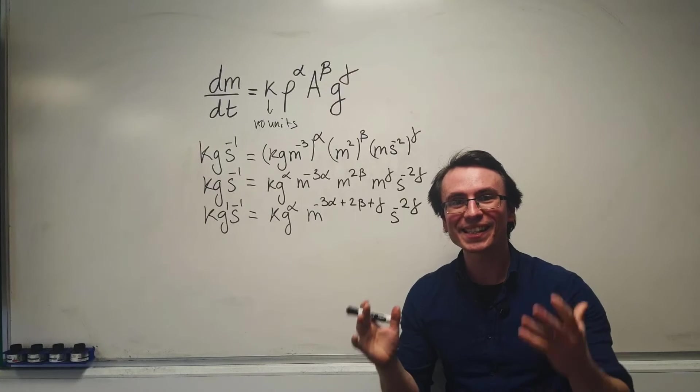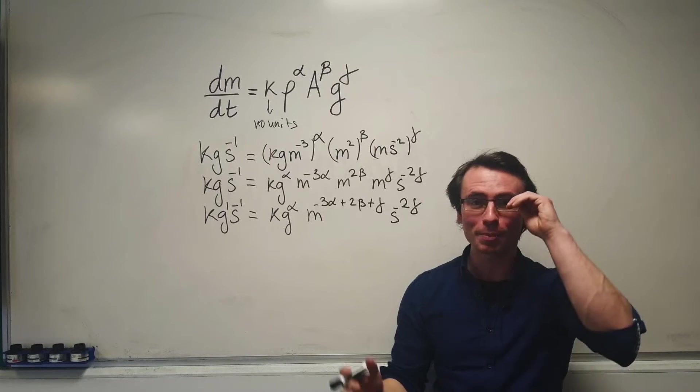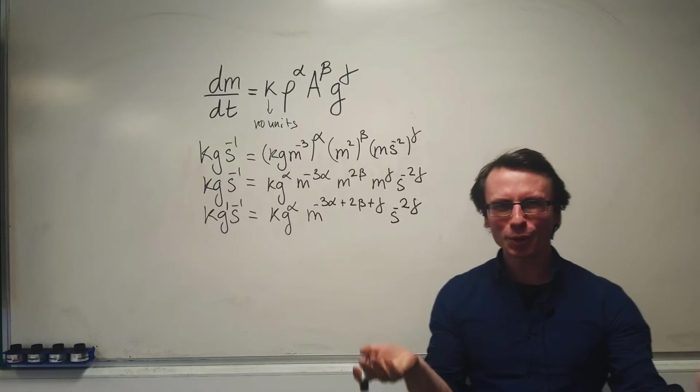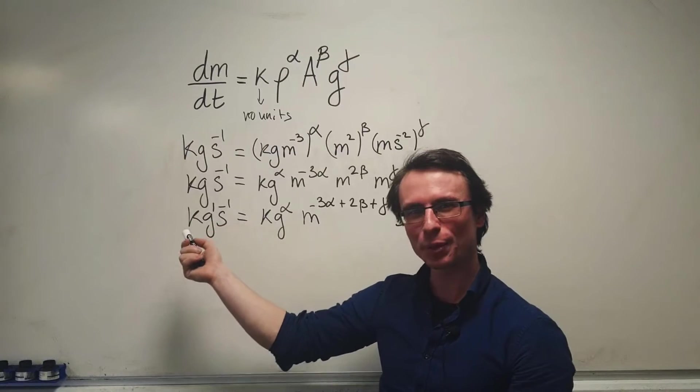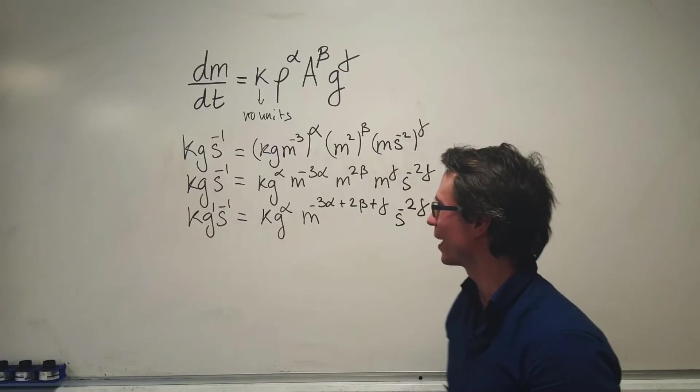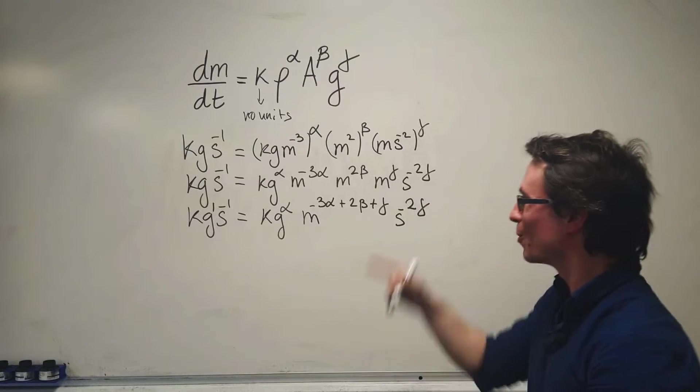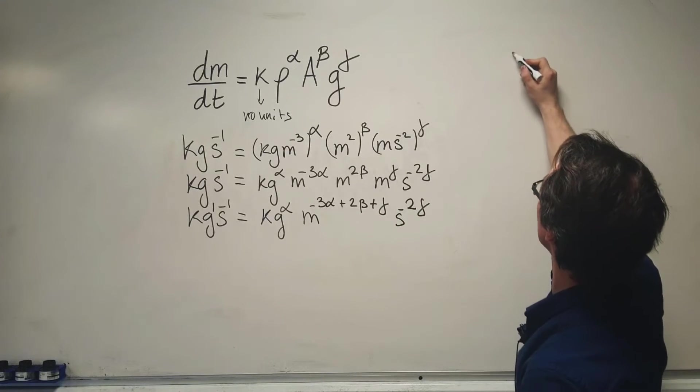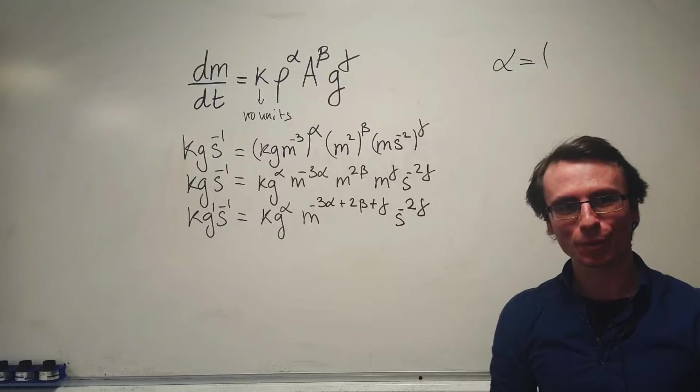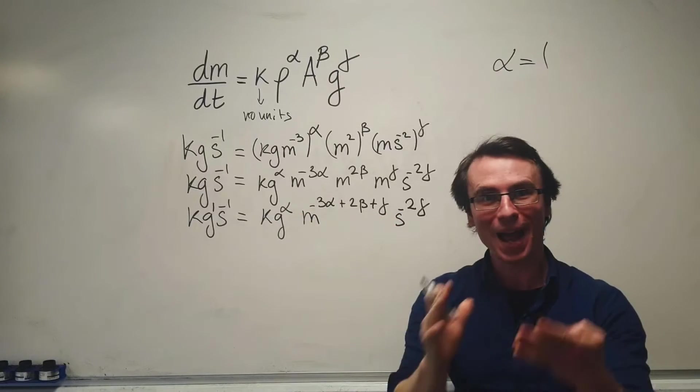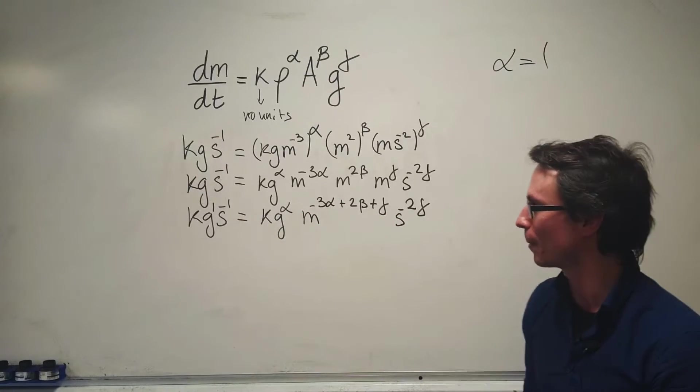Now we can set the units on the left equal to the units on the right. On the left, we have kilograms to the power of one, so alpha equals one. We'll make a system of equations.